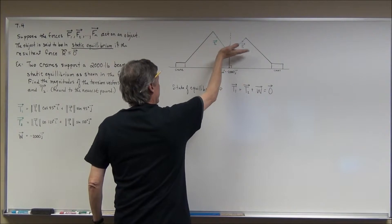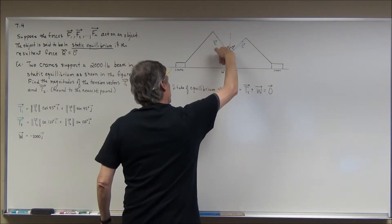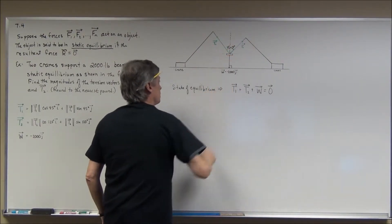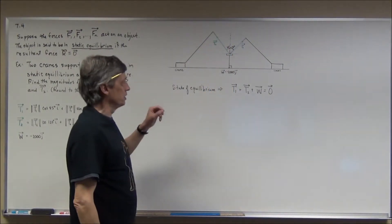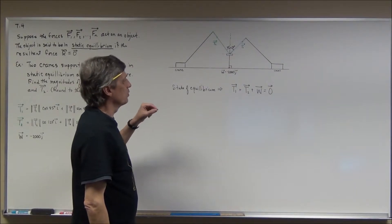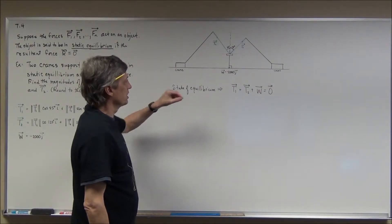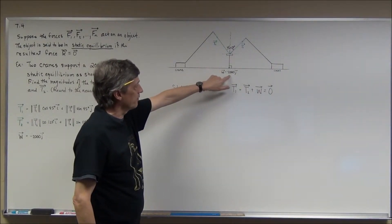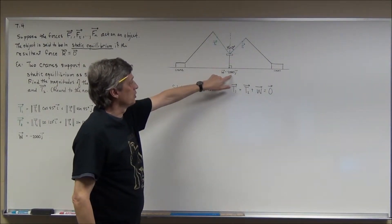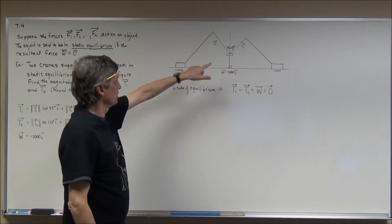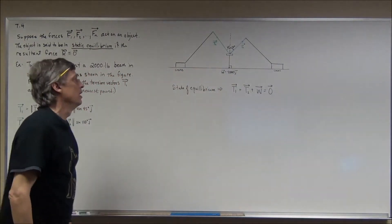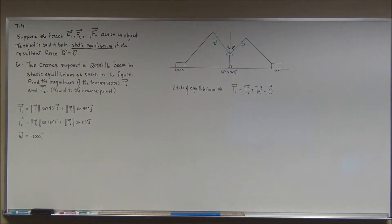Because if you look at this angle, we're looking at 270 degrees. The cosine of 270 degrees is zero, the sine of 270 degrees is negative one — that's why it's negative times the 2,000, which was the magnitude of the 2,000 pound weight of the beam.